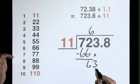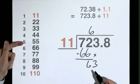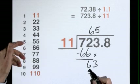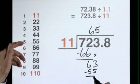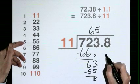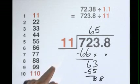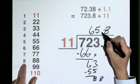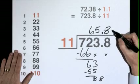11 goes into 63, 5 times. 5 elevens are 55. Subtract to find the remainder. Carry down the 8. 11 goes into 88, 8 times. Decimal point here above this decimal point. The answer is 65.8.